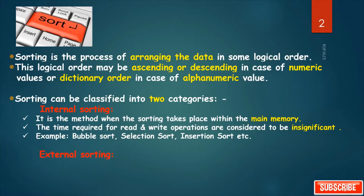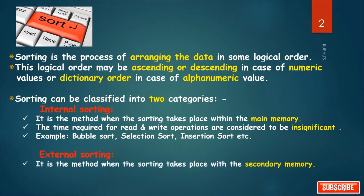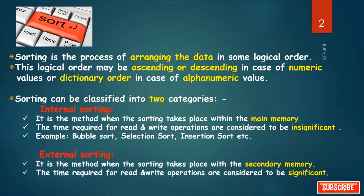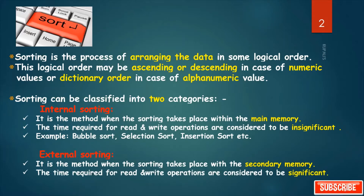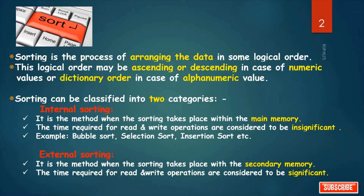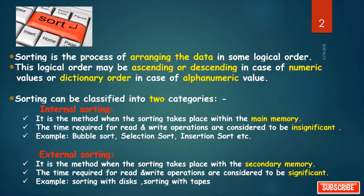The next type is external sorting. It is the method when the sorting takes place with the secondary memory. The time required for read and write operations is considered to be significant here. Examples are sorting with tapes, sorting with disks, etc.